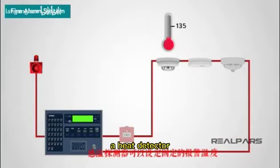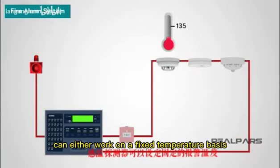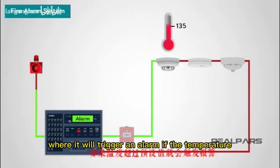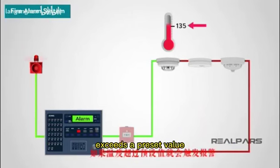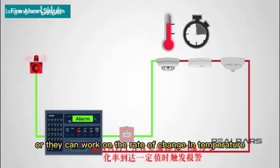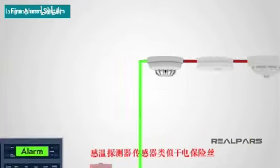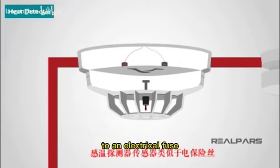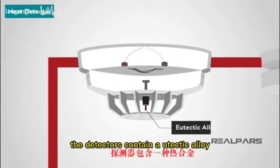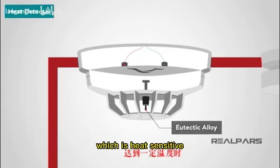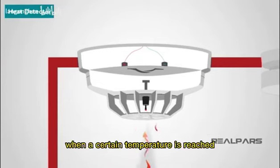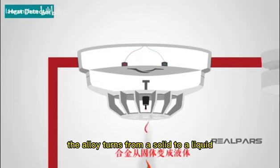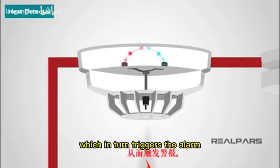A heat detector can either work on a fixed temperature basis, where it will trigger an alarm if the temperature exceeds a preset value, or they can work on the rate of change in temperature. Commonly, heat detectors work in a similar way to an electrical fuse. The detectors contain a eutectic alloy, which is heat sensitive. When a certain temperature is reached, the alloy turns from a solid to a liquid, which in turn triggers the alarm.